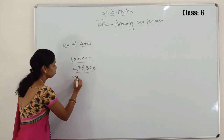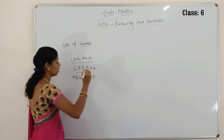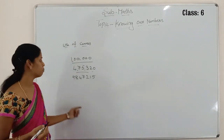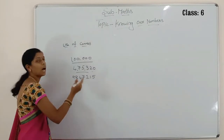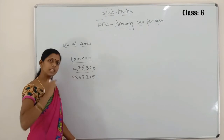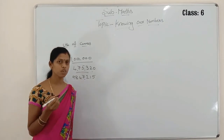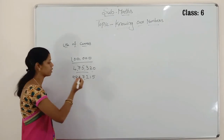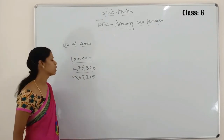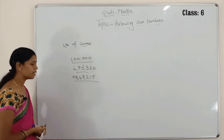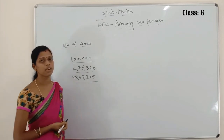One more number I am giving. Can you read this number? We can't read it directly. When we use commas only, we can read and write easily. First comma is always after three digits from the right — one, two, three — put a comma. For the second comma, after two digits — one, two — put a comma. Now you read: ninety-eight lakhs, forty-seven thousand, two hundred and fifteen. When you put the commas, we can read very easily.